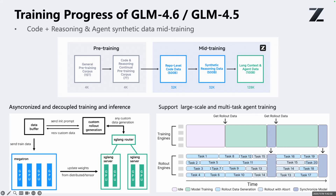Then we come to mid-training, where we move to repo-level code including multiple files, issues, pull requests, and diffs from the same project — all packed into one long context. The goal is to teach the model to follow code files, understand change history, understand previous query chains, and read real project structure. At this stage, we extend the context to 32,000 tokens, so the model can basically see the key files of a medium-sized repo in one shot. Then as synthetic reasoning data, we add about 500 billion tokens covering math, science, and algorithms with experienced thinking traces, laying the groundwork for future agent behaviors like breaking down tasks, reflecting on mistakes, and doing long-horizon reasoning.